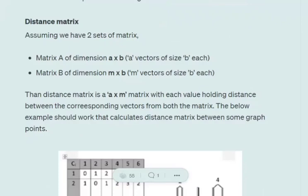Assume that we have two sets of matrices: Matrix A of dimension a x b and Matrix B of dimension m x b, where a and m are vectors of size b each.